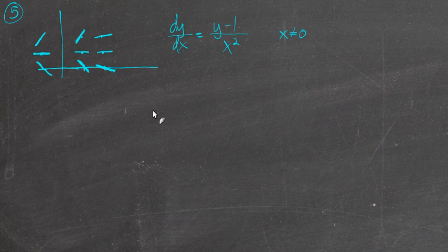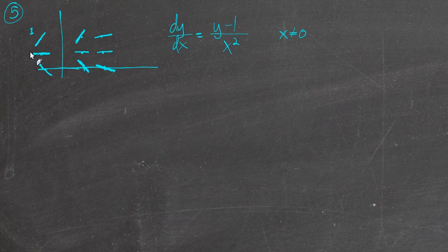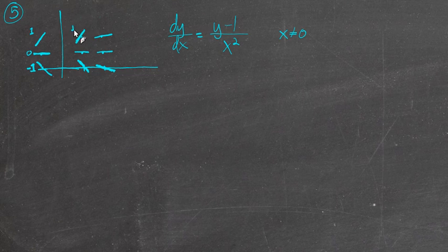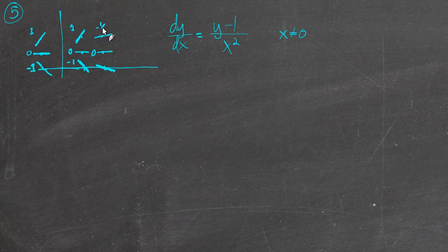So there's your slope field. It would probably be best on your answer sheets to indicate the slopes you calculated — a slope of 1, a slope of 0, a slope of negative 1, slopes of negative 1 fourth — or rather positive 1 fourth — and this one's negative 1 fourth. You can do a table of values or something, but it's a good idea to indicate that you know what the slopes are.